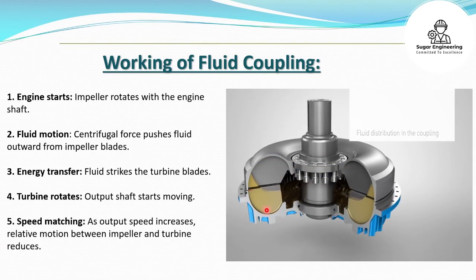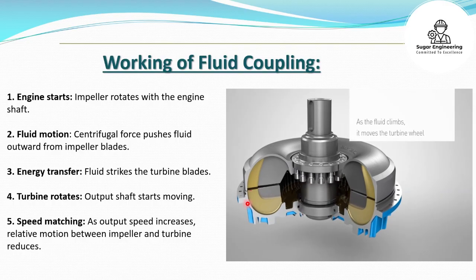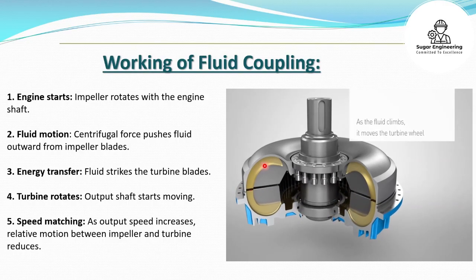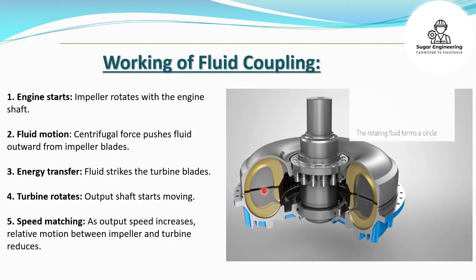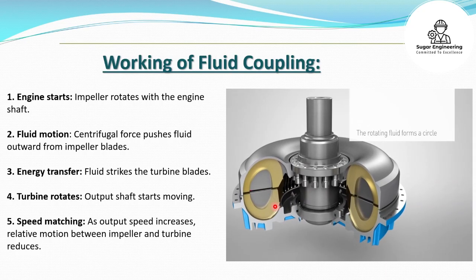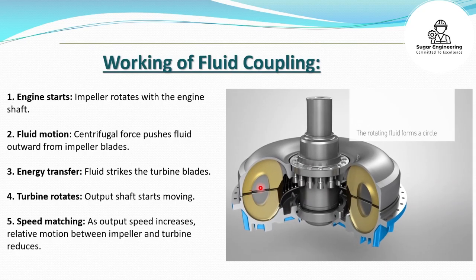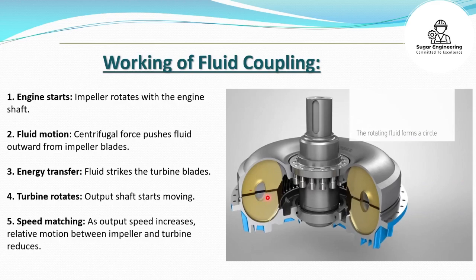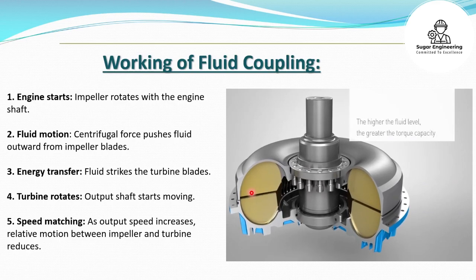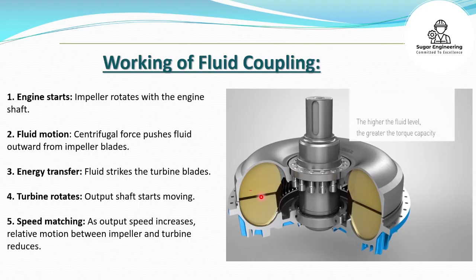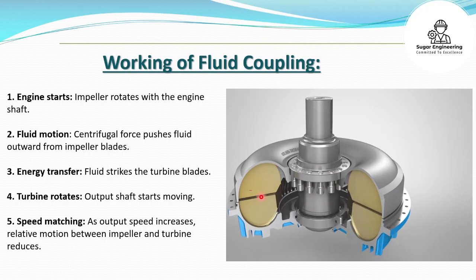When the pump wheel rotates, the fluid climbs and moves towards the turbine blades. The torque is transmitted from the pump wheel to the turbine wheel. A rotating fluid will form a circle, and the higher the fluid level, the greater the torque capacity of the fluid coupling.